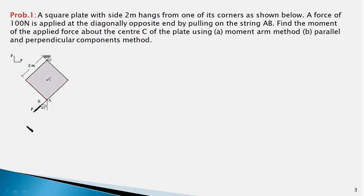In this problem we have a square plate of side two meters which hangs from one of its corners, and a force F of 100 newtons acts on point A of the plate. The force makes an angle of 45 degrees with the vertical. We are required to find the moment of the force about point C, which is the center point of the plate. We will solve the problem first using the moment arm method — directly from the force itself — and then using the perpendicular and parallel components of the force.